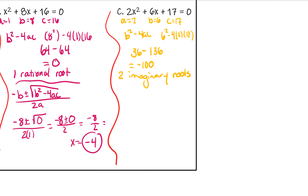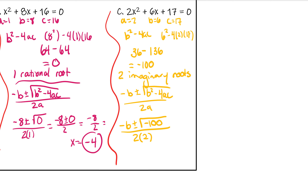We have the opposite of b plus or minus the square root of b squared minus 4ac, all over 2a. Negative b gives us negative 6, plus or minus the square root of negative 100, all over 2 times 2. We are lucky this time — we ended up with a negative perfect square. The square root of negative 100 is 10i.